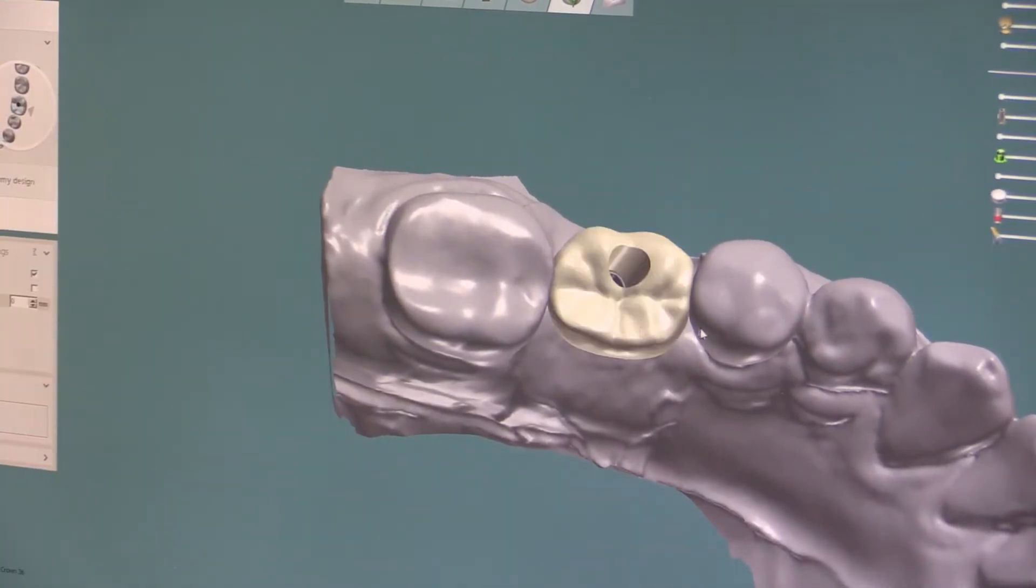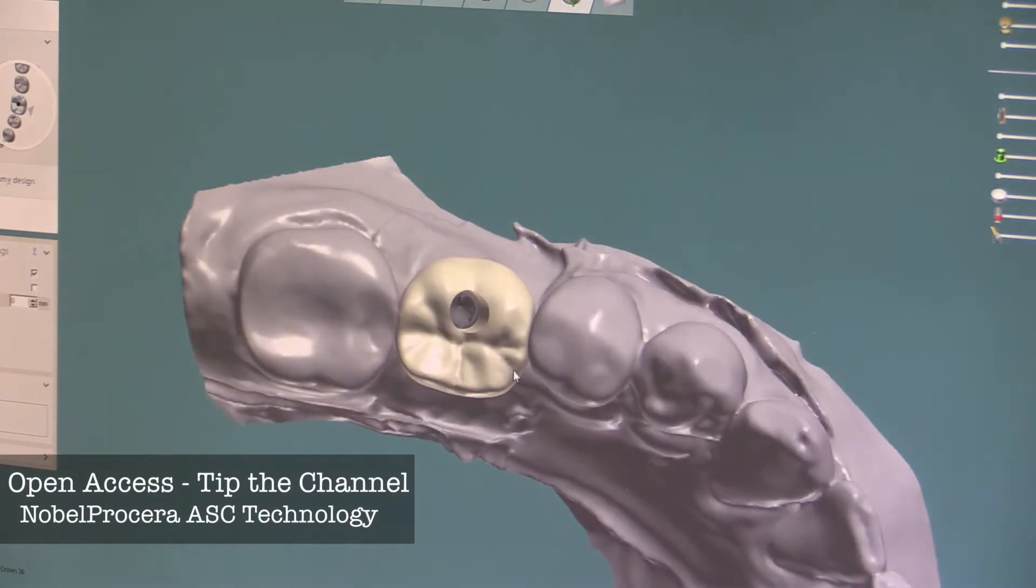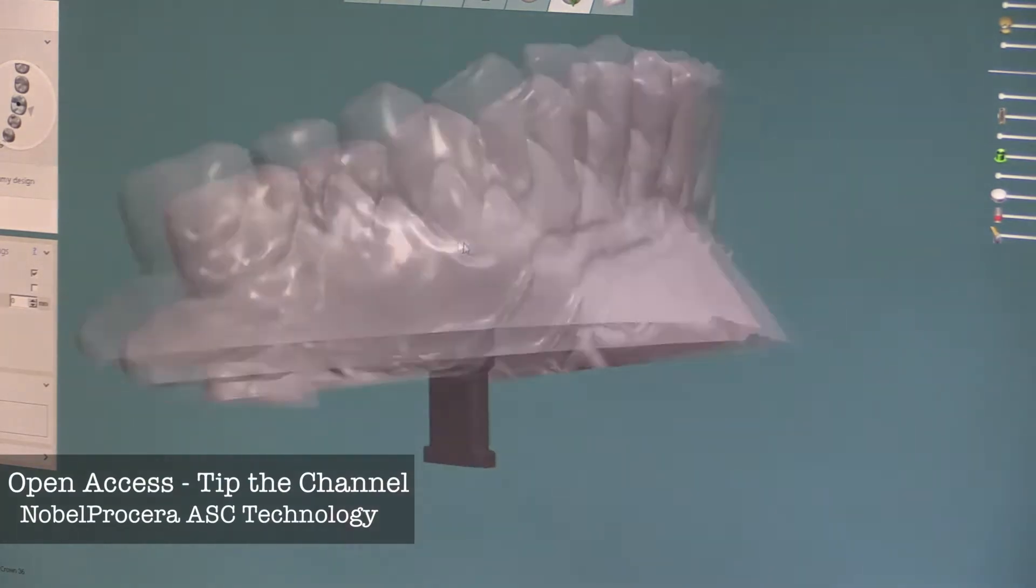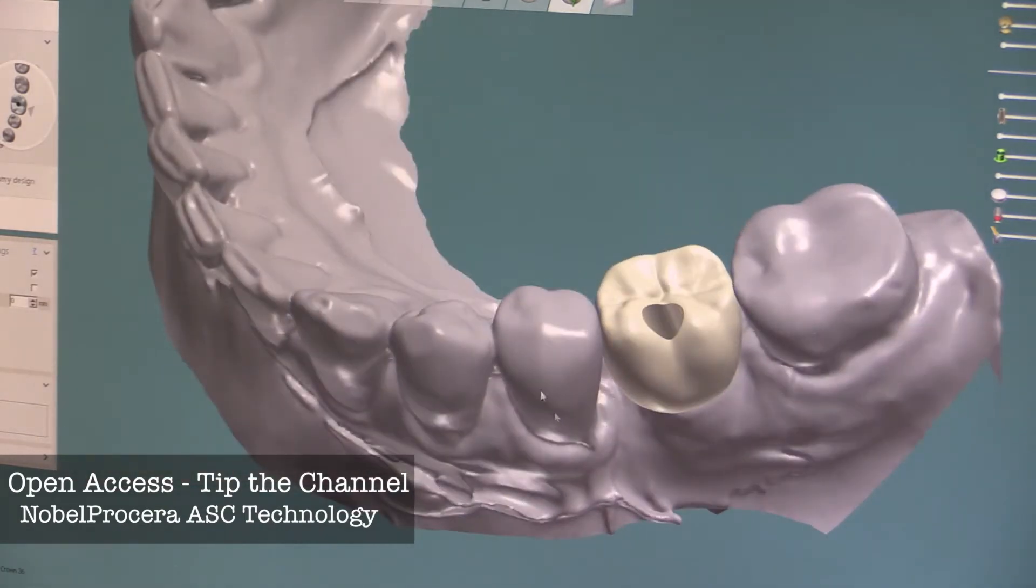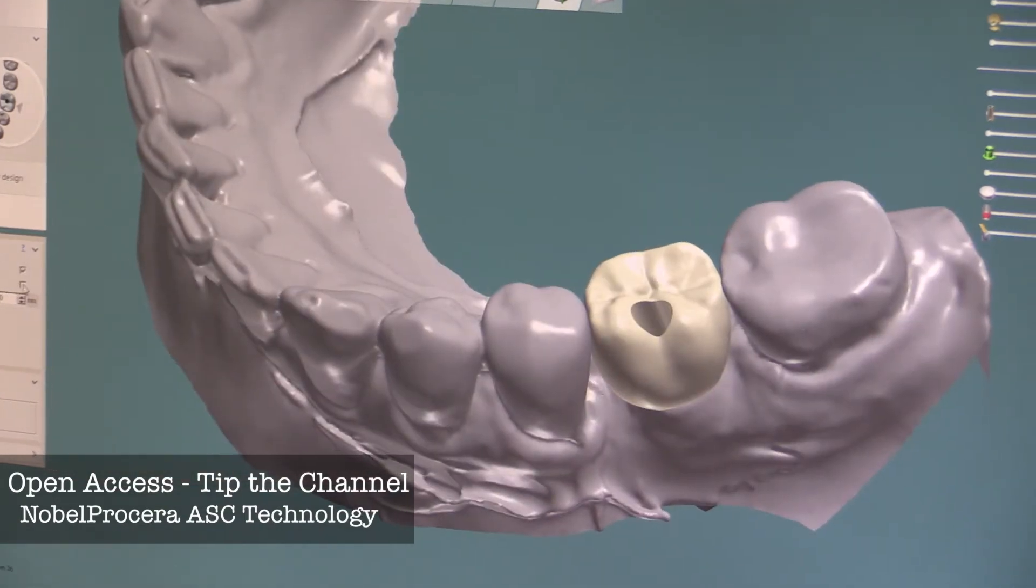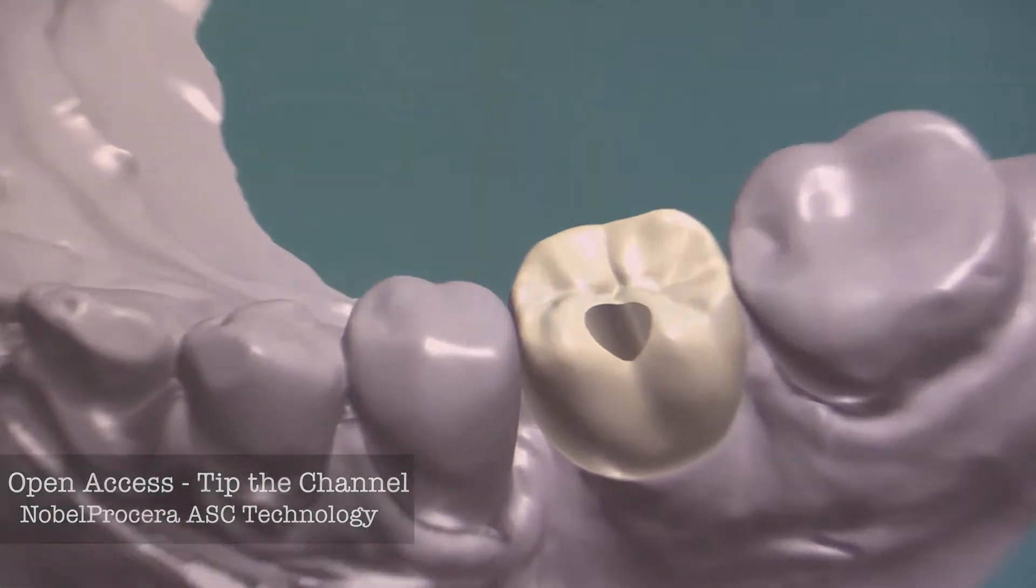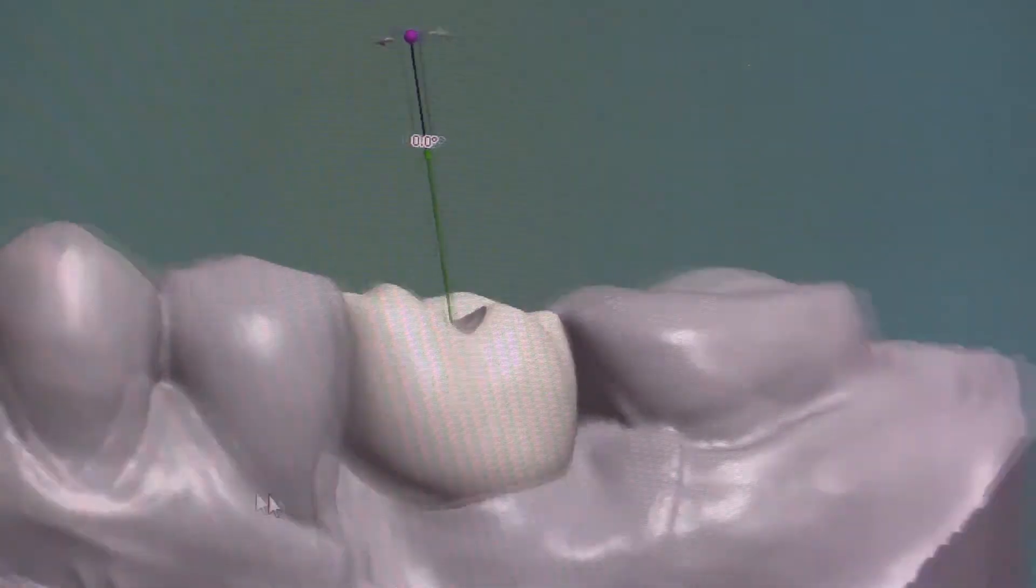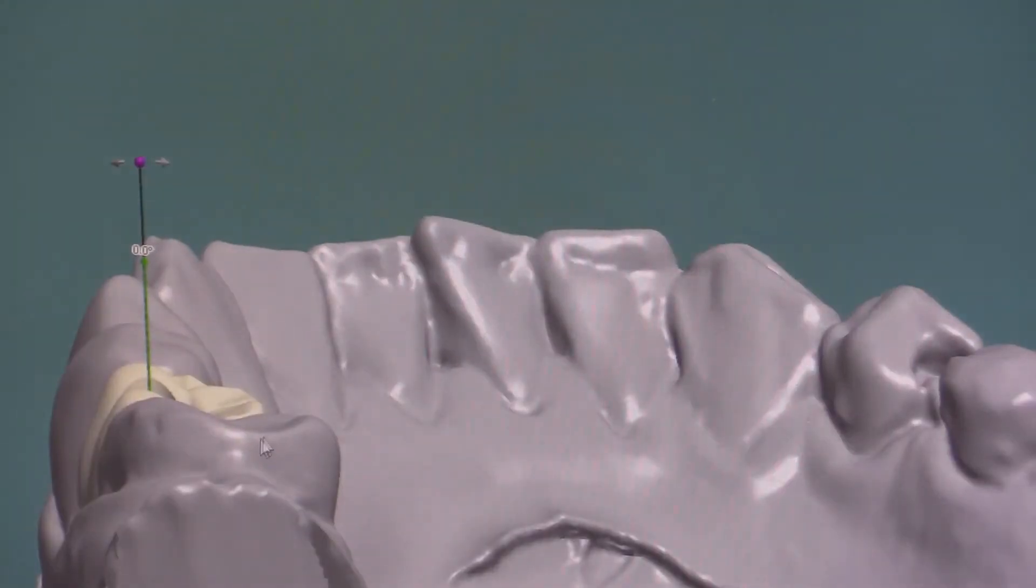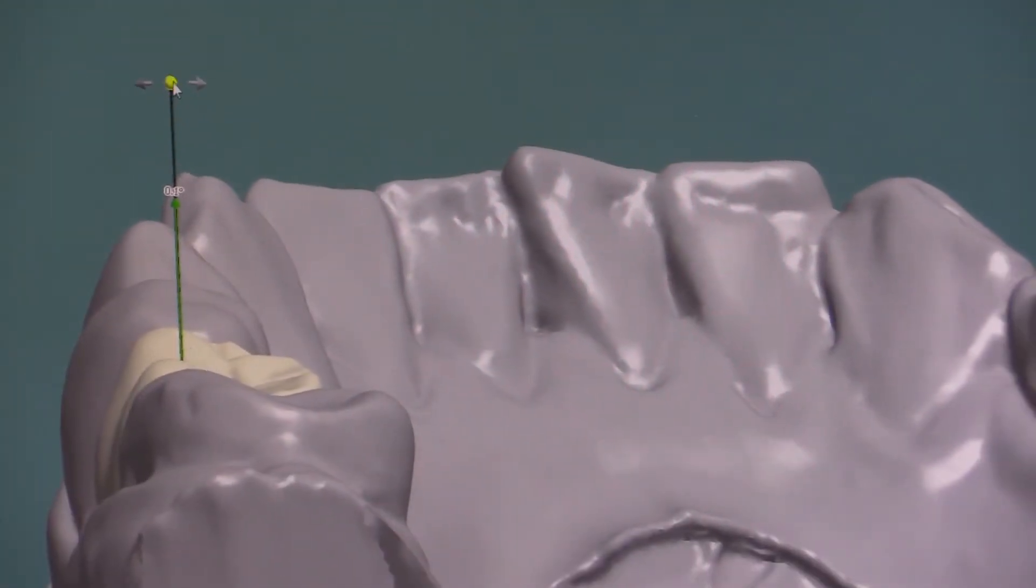So if you start to look at the channel, you can see that the channel is coming out through the facial. The buckle aspect of this is not ideal because this is the functional cusp. And therefore when we would occlude on this, if this was a screw retained crown, you'd be hitting against that restorative resin all the time causing it to wear and tear and break in this area. So not ideal.